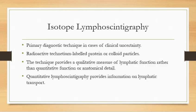Another variety is isotope lymphoscintigraphy, which is the primary diagnostic technique in cases of clinical uncertainty. Radioactive technetium-labelled protein or colloid particles are used. The radioactive particle is injected, located with a gamma probe, and scans are taken. This technique provides a qualitative measure of lymphatic function rather than quantitative or anatomical detail.